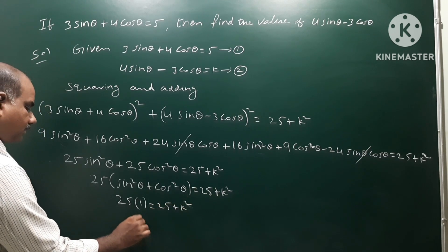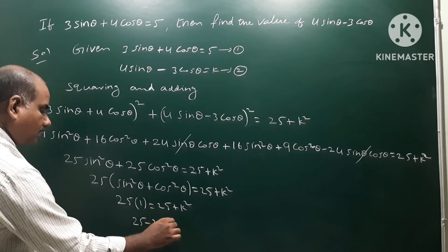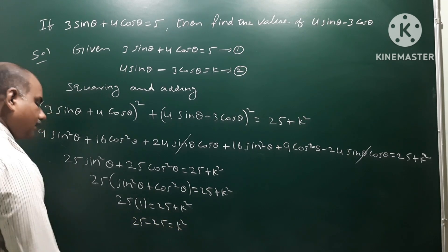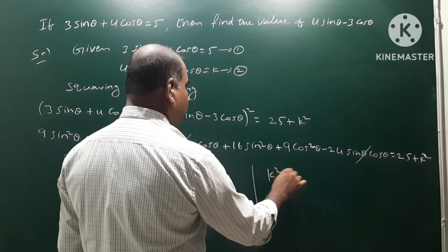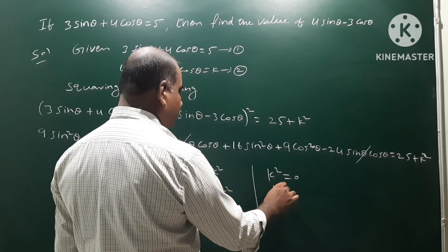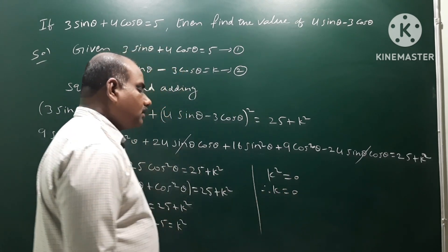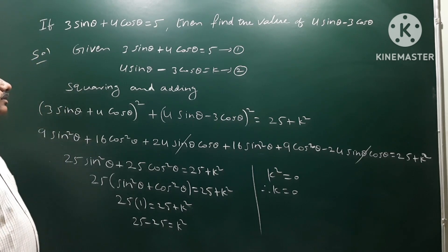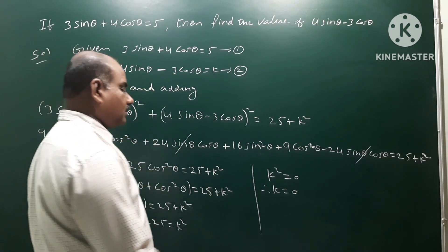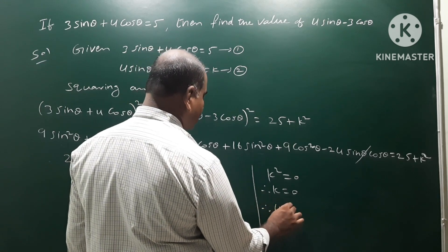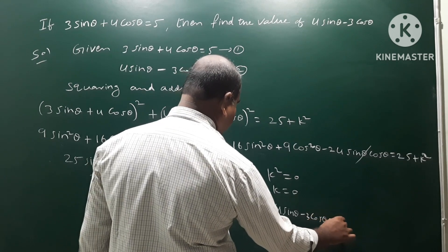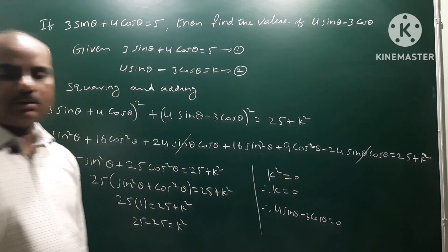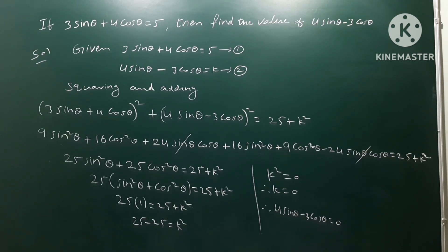So 25 = 25 + k², therefore k² = 25 − 25 = 0, which means k = 0. Since k = 4sinθ − 3cosθ, therefore 4sinθ − 3cosθ = 0. That is the answer. Thank you.